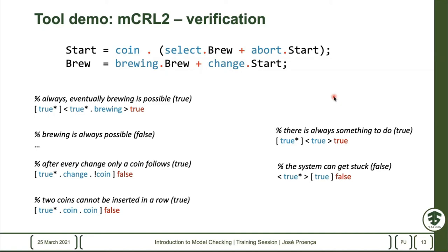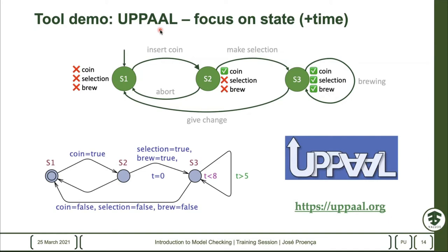Now I'm going to jump into the other tool, UPPAAL, which also has existed for many years. This was developed by Uppsala and Aalborg universities in Sweden. It's not free in the sense that commercial projects need special licenses, but for academic purposes it can be used very easily. In this system, UPPAAL ignores all these actions — you can introduce some notion of action but it's only used for synchronizing between parallel systems, not for the model checking part.